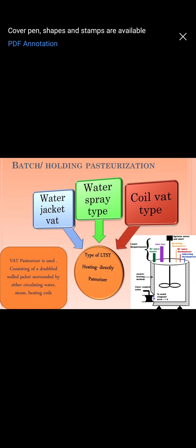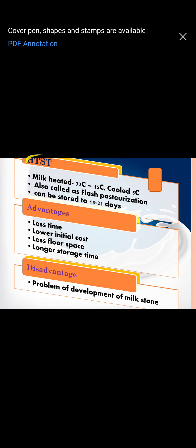Moving on to HTST — high temperature short time. The milk is heated to 72 degree centigrade, maintained for 15 seconds, and then immediately cooled to 5 degree centigrade. Students, remember that cooling is also part of the pasteurization process — you must mention it. HTST is a kind of flash pasteurization, and by this method you can store the milk for around 15 to 21 days, almost a month.